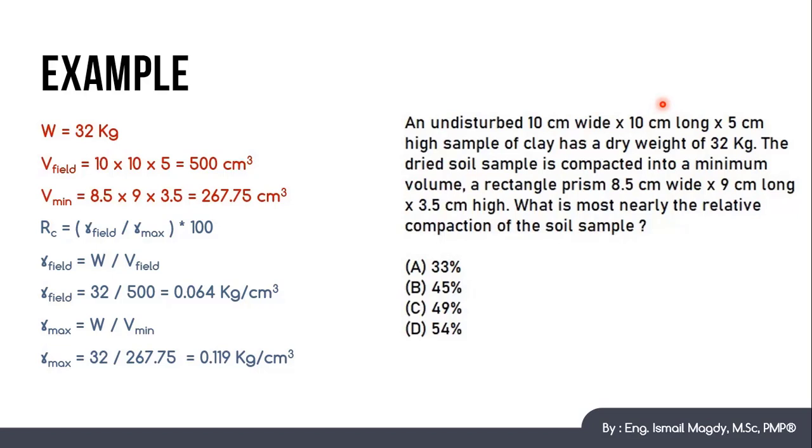You have to notice here that the gamma maximum equals the weight over the V minimum. Because if the volume is minimum, this means that the density is at its highest. And vice versa, of course, if the volume is maximum, then this is the minimum density. So gamma maximum equals weight over V minimum.